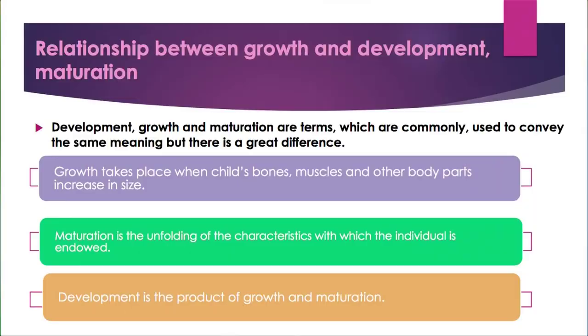The terms growth, development, and maturation are simultaneously used — someone may use all three terms in the same sense. But there is a great difference. Growth takes place when bones, muscles, and other body parts increase in size. It implies changes in human beings in terms of weight, height, body parts, and other biological aspects of an individual. Maturation is the unfolding of the characteristics with which the individual is endowed.